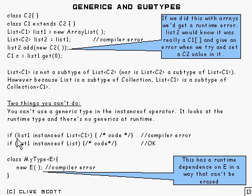So if you try to do something like this, ask is list1 an instance of list of C1, you'd get a compiler error because it doesn't make any sense. Because what happens is, of course, this is erased, and it knows that that's a nonsensical statement to make.